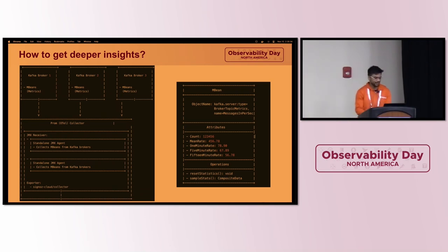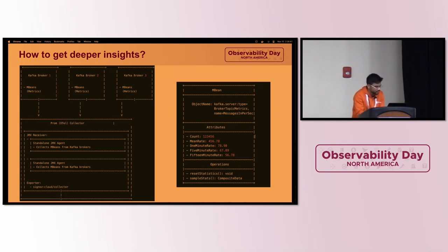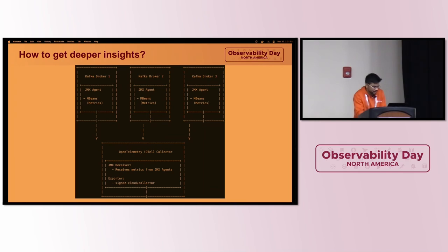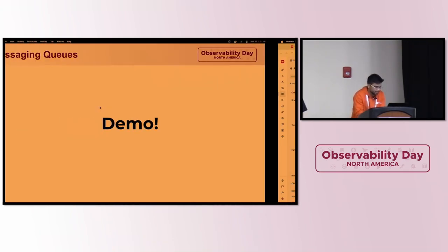If you are using OpenTelemetry to collect metrics and spans from your client and want to collect metrics from Kafka, there are different ways to do it. You can have a JMX receiver in the OTel collector to fetch all the metrics from different JMX servers of the corresponding brokers, or a standalone JMX metrics gatherer scraping metrics from JMX servers, or a Prometheus JMX agent installed in every Kafka broker. Let's see this in a demo.